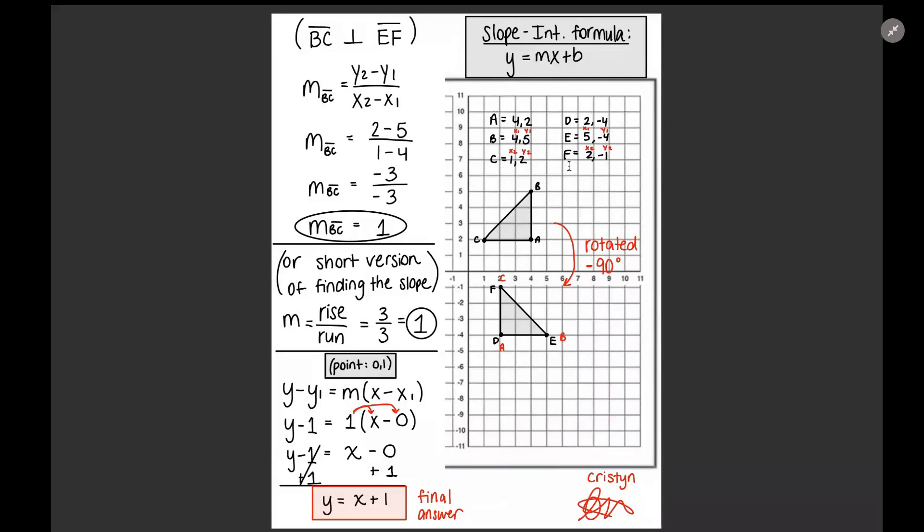I have the points appear and the first thing I did was read how the final answer we want is slope intercept form of the line from ABC that's perpendicular to the segment EF.